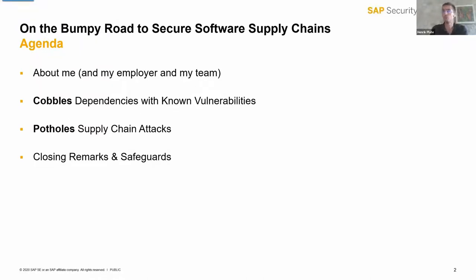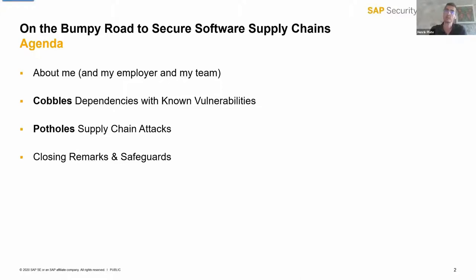The first problem is one known for quite some time, especially since Heartbleed in 2014, which is the use of components with known vulnerabilities. The second is a problem theoretically known since a long time as well, but which gained quite some attention in the last couple of years and which is gaining much more attention in the future — that is my prediction.